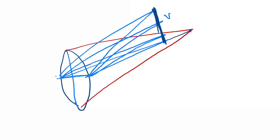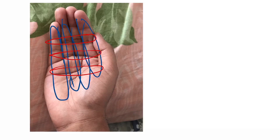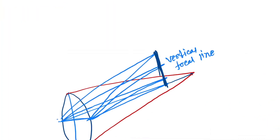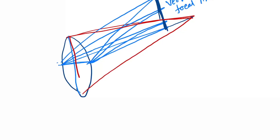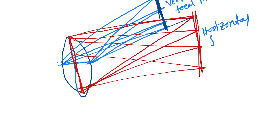The horizontal meridians cause the formation of a vertical focal line. You can make your hand and visualize this in 3D. Similarly, the vertical meridians form focus points that, when joined in 3D, create a horizontal focal line. This concept is very important.